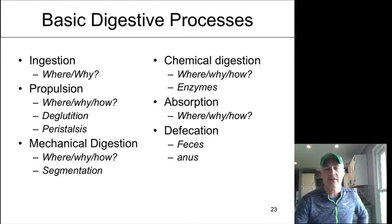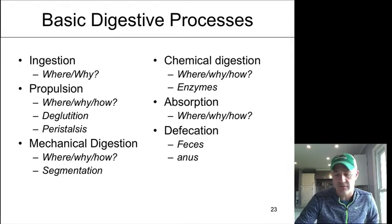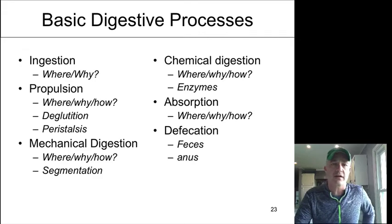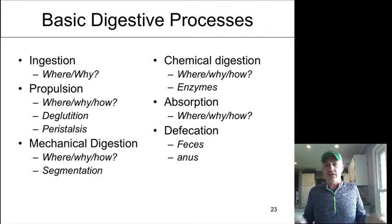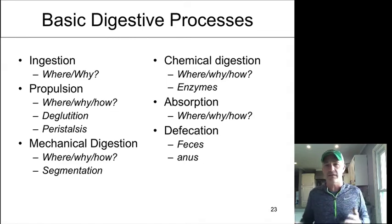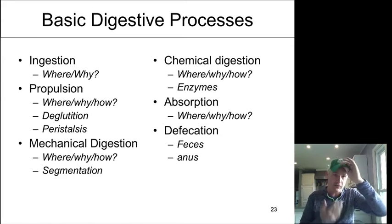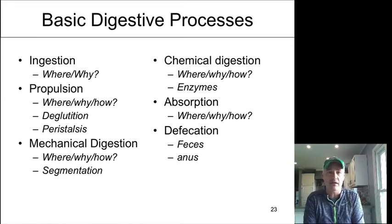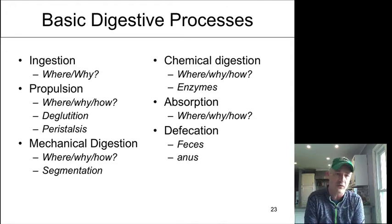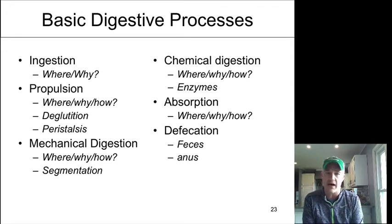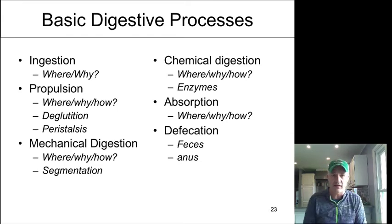We'll back up and start working our way through the digestive track. We'll start at the mouth, but the one thing to keep in mind as we're going through all this is what type of digestive processes are taking place where. Ingestion is kind of an obvious one — we know where we take food in — but then we have to talk about how food is moved through in terms of how we swallow and how food moves towards the tail end of the track.